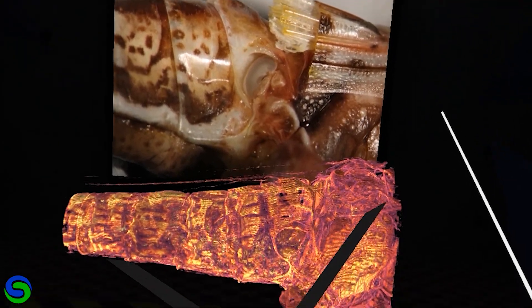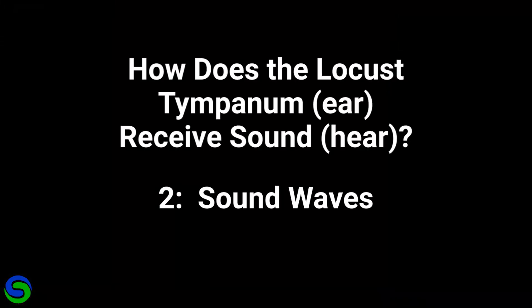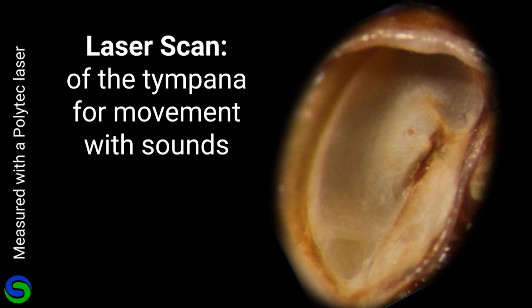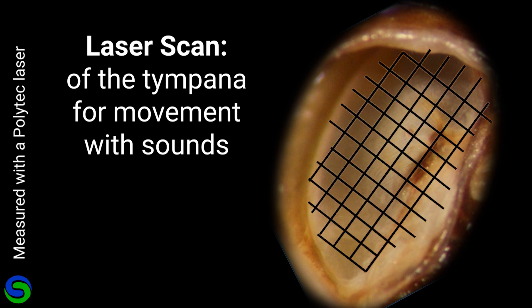Now that we are more familiar with the anatomy, how does the locust hear the different sound waves? I took a laser scan of the locust tympana for nanometer level movements with sound. I created a grid and the laser scanned each point for movement.